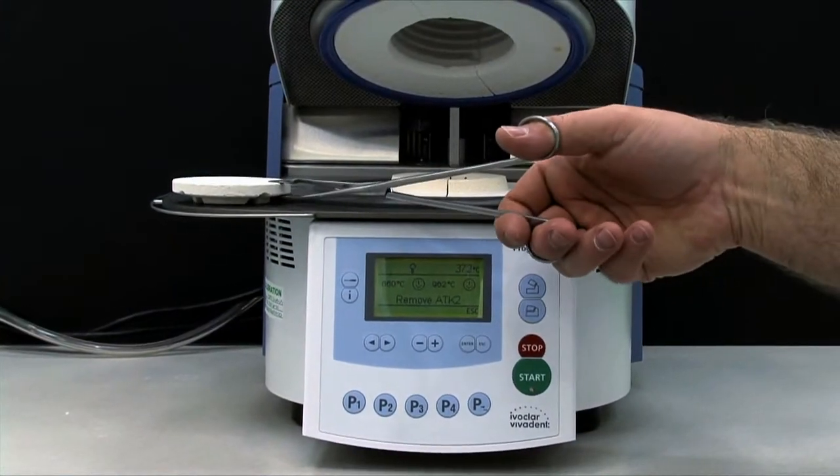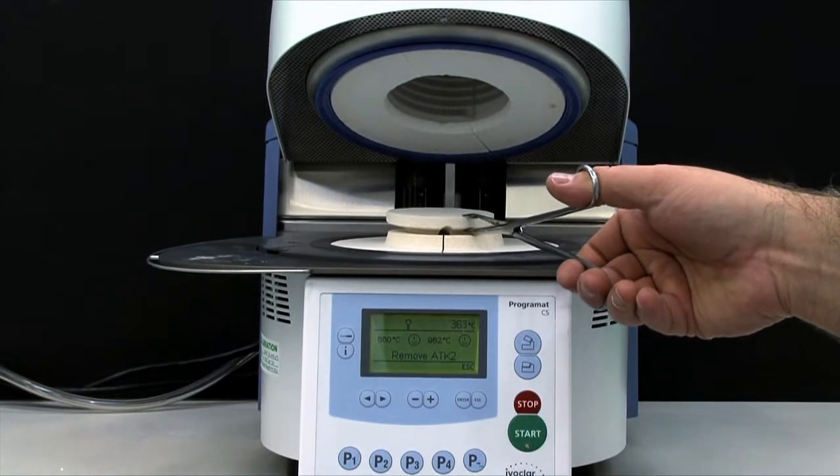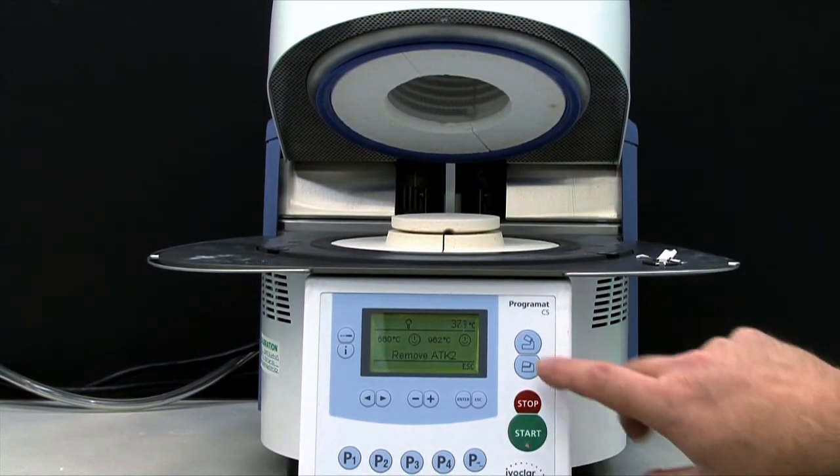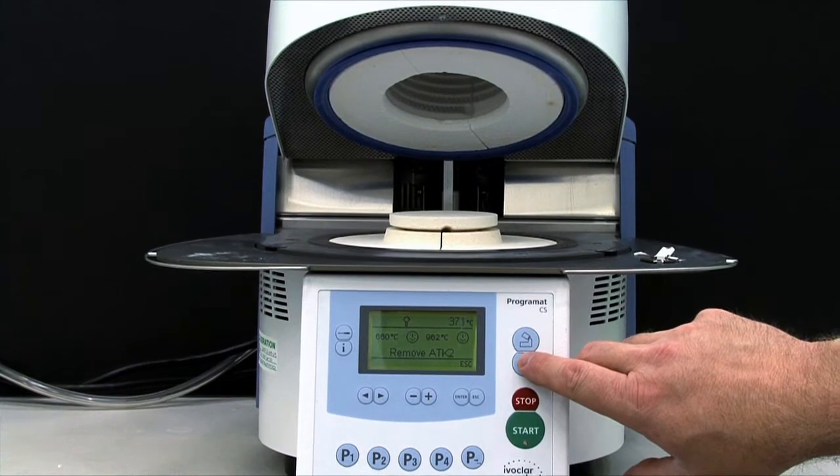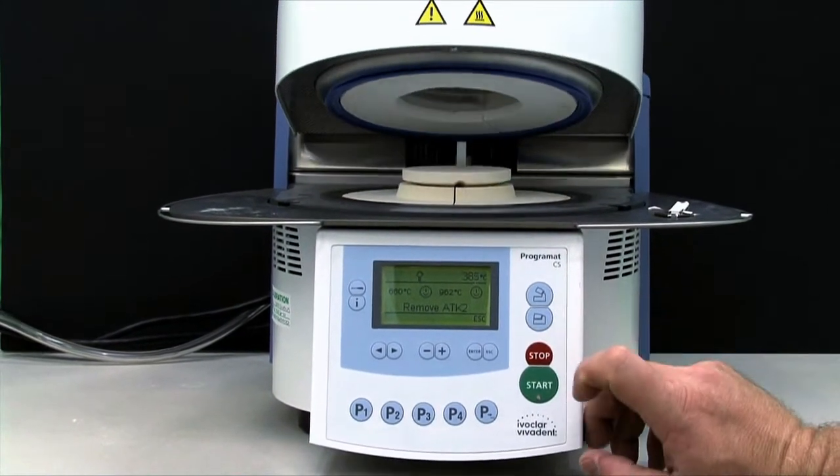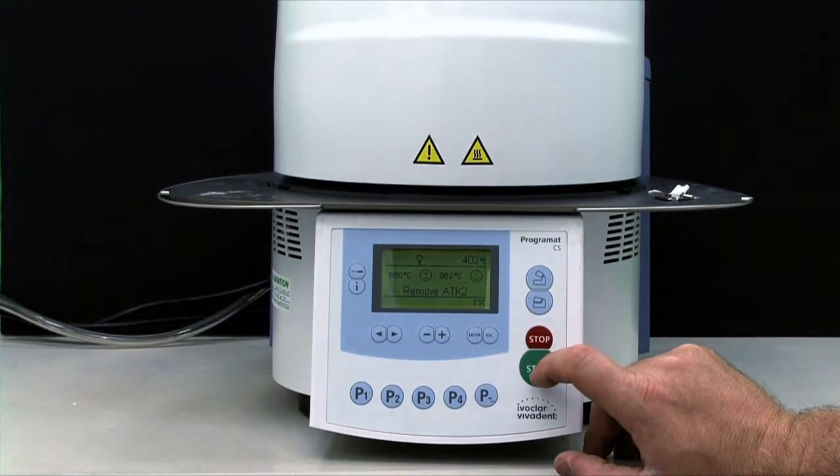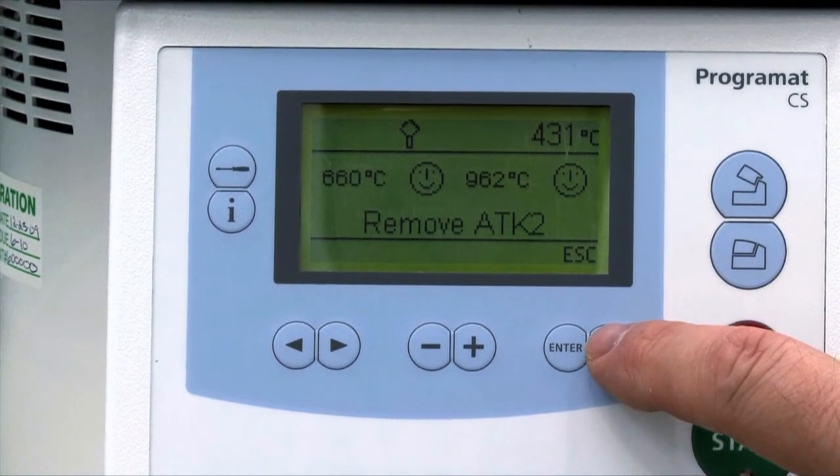Replace the firing plate and close the furnace head. Your program at CS is now calibrated and ready for use. Note the ATK2 can only be used once. Use a new ATK2 for the next calibration.